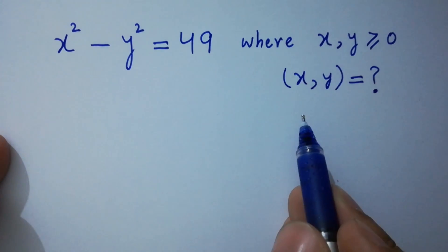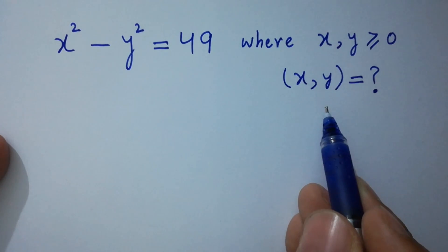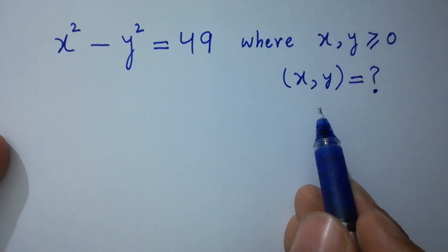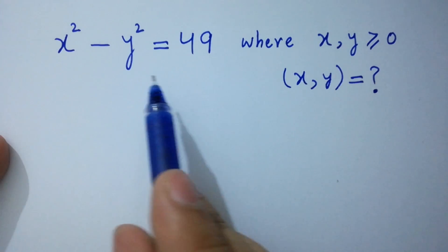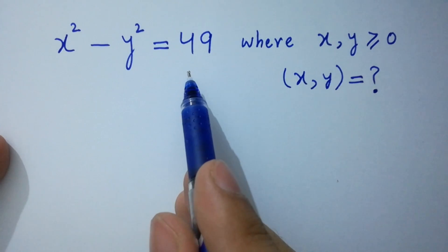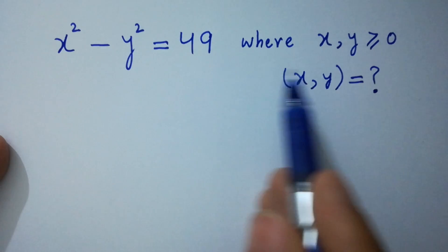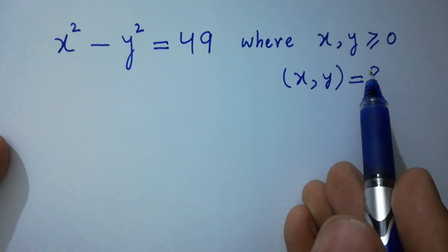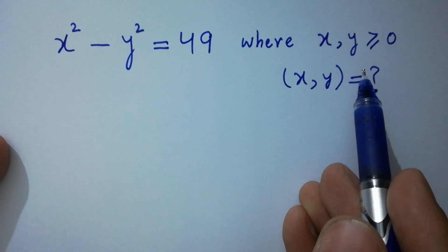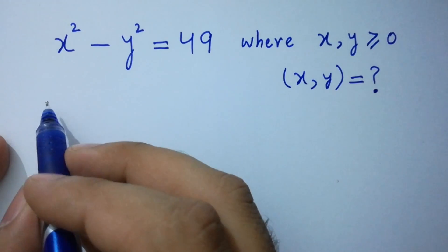Hello friends. Find the value of x and y if x squared minus y squared equals 49, where x and y are greater than or equal to 0 — that is, positive values. Let's find a solution.